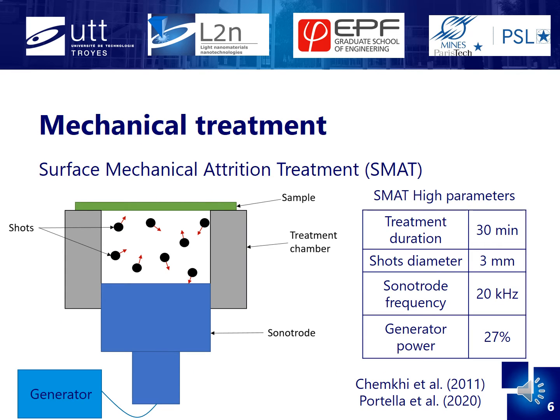When all the parts were printed and sintered, they were polished until having a mirror finish, and a few of them received the SMAT treatment. The sample grain is placed at the top of the setup and is maintained while multiple shots are moving randomly, thanks to a vibrating sonotrode at 20 kHz. The plastic deformation after the impact between the shot and the surface leads to the creation of a nanocrystallized layer. To complete the treatment, it is necessary to SMAT the other side of the sample. We chose what is called SMAT high, as the results ensure a good grain refinement and the smallest roughness among all SMAT parameters studied.